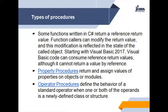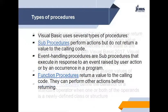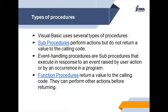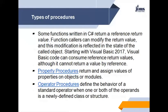Some functions written in C# return a reference return value. Function callers can modify the return value and this modification is reflected in the state of the called object. Starting with Visual Basic 2017, Visual Basic code can consume reference return values, although it cannot return a value by reference. The third type is property procedure, which returns and assigns values to properties on objects or modules. Operator procedures define the behavior of a standard operator when one or both of the operands is a newly defined class or structure.